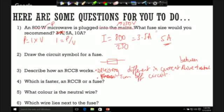And then it will break the circuit or shut off the circuit, turn off the circuit. Because the good thing about these is once you fix the circuit you can turn them straight back on again, unlike a fuse which you'd have to replace. So which is faster? That would be the RCCB. What color is the neutral wire? That's blue. And which wire lies next to the fuse? That is the live wire.